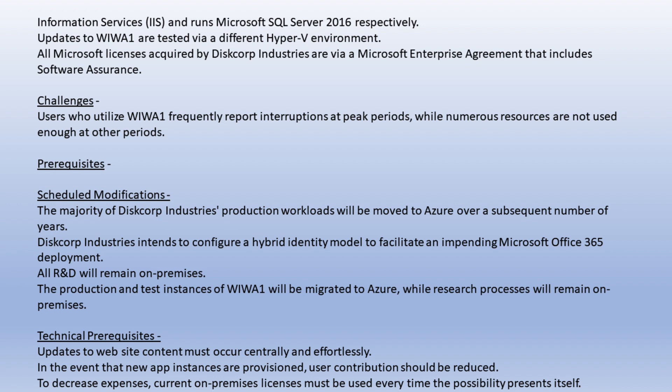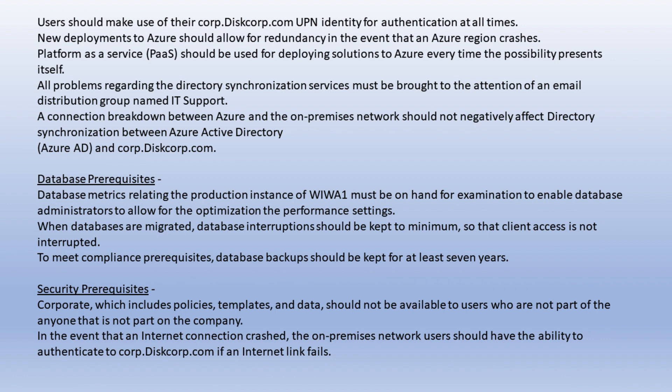Technical Prerequisites: Updates to website content must occur centrally and effortlessly. In the event that new app instances are provisioned, user contribution should be reduced. To decrease expenses, current on-premises licenses must be used every time the possibility presents itself. Users should make use of their corp.discorp.com UPN identity for authentication at all times. New deployments to Azure should allow for redundancy in the event that an Azure region crashes. Platform as a Service (PaaS) should be used for deploying solutions to Azure every time the possibility presents itself.